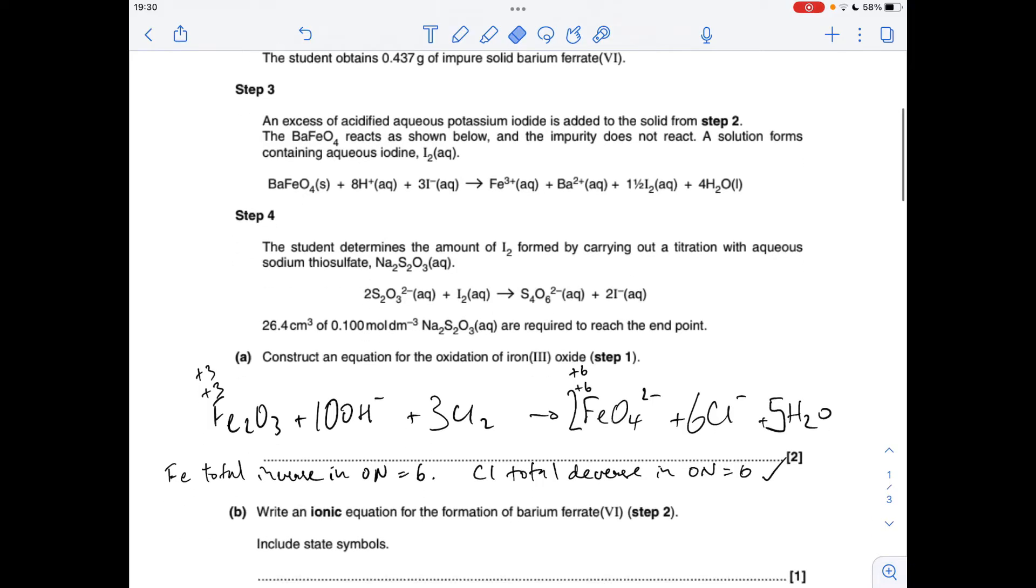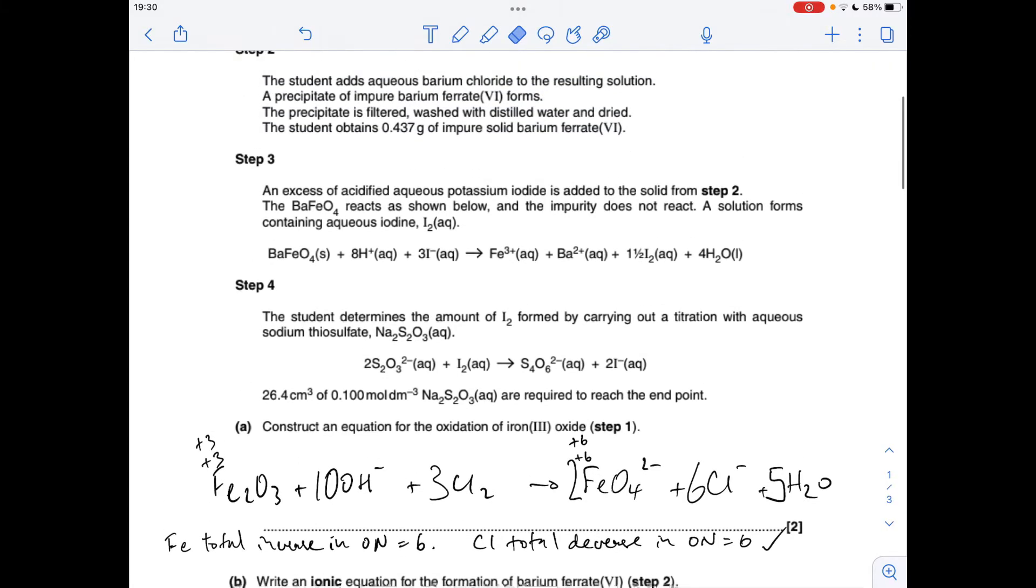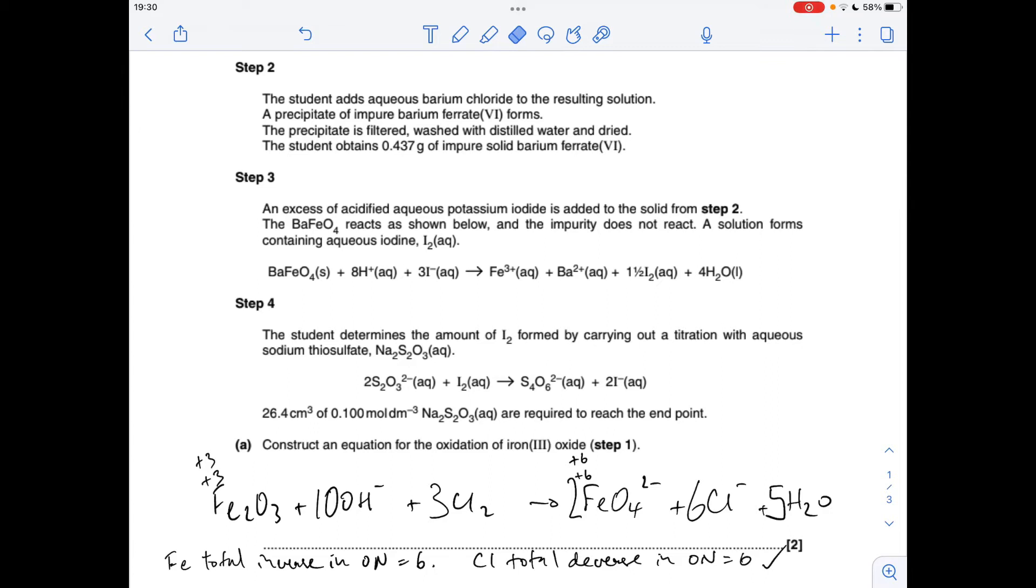Moving on to part B now, we've got to write an ionic equation for the formation of barium ferrate(VI) in step 2. We'll just have a quick look at step 2. Student adds aqueous barium chloride to the resulting solution. We've got Ba²⁺(aq) and Cl⁻(aq) as well. The resulting solution in step 1 contained that FeO₄²⁻(aq). The precipitate of impure barium ferrate(VI) forms, so that's BaFeO₄ solid. This is our ionic equation here. We've got that reacting with that to form that.